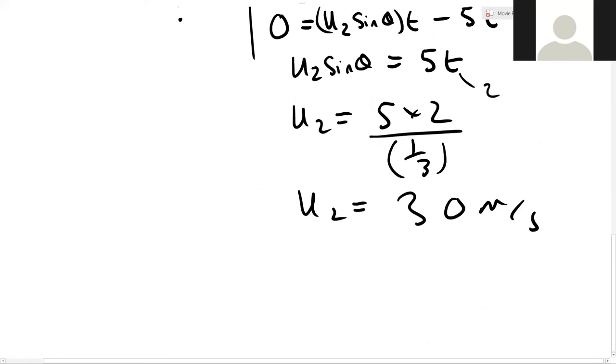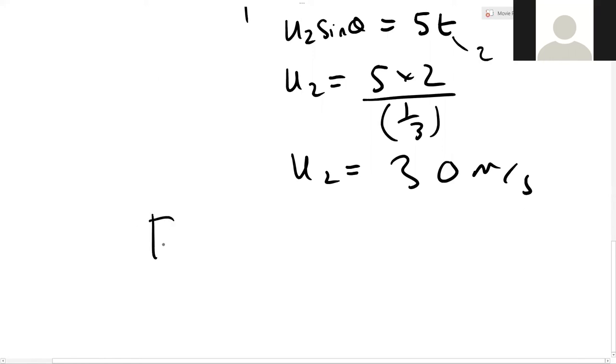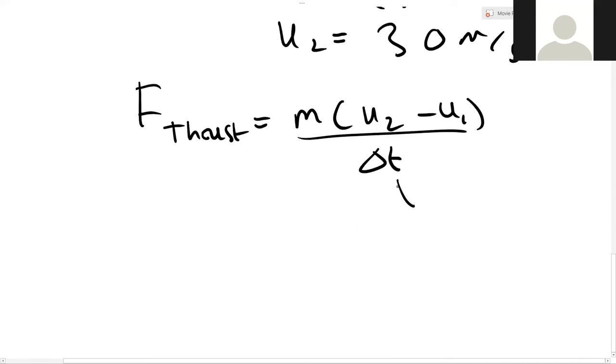So we have the speed that it leaves the ramp at. Let's plug that back into our thrust equation, f thrust. Well, f thrust is equal to m into u2 minus u1 divided by delta t. But we have all of these values. Remember this delta t is actually going to be 6 seconds because it's the time it takes the car to speed up.